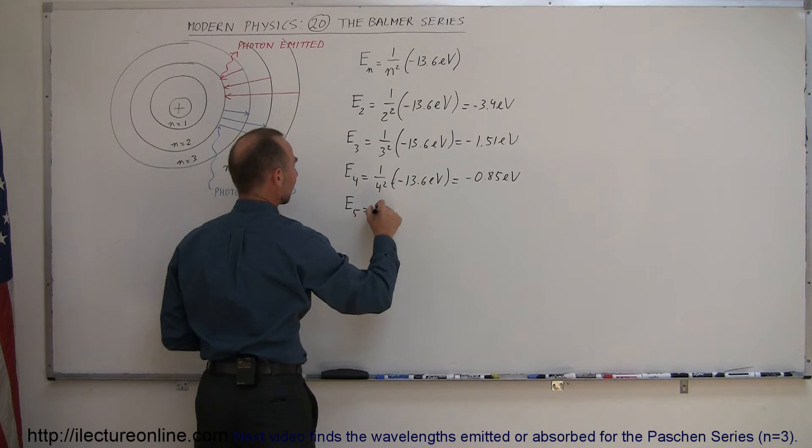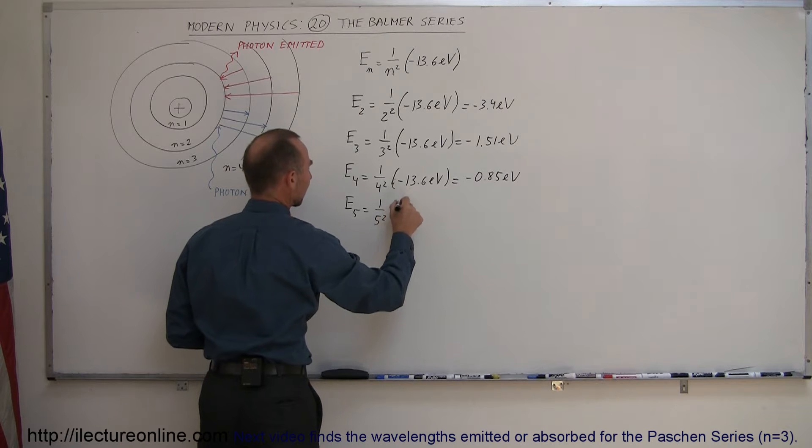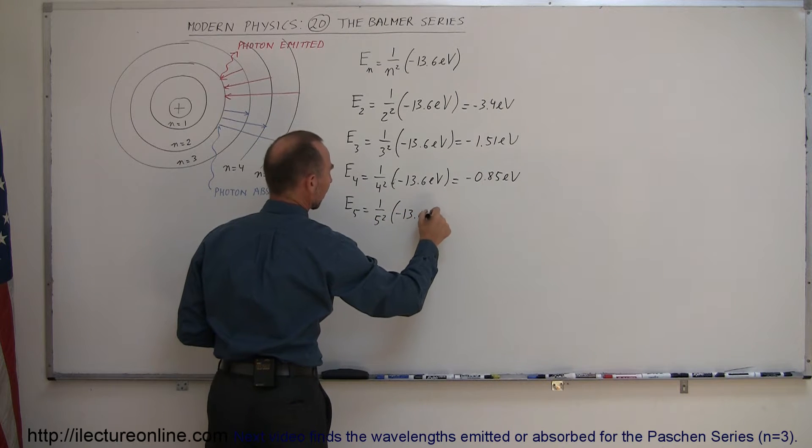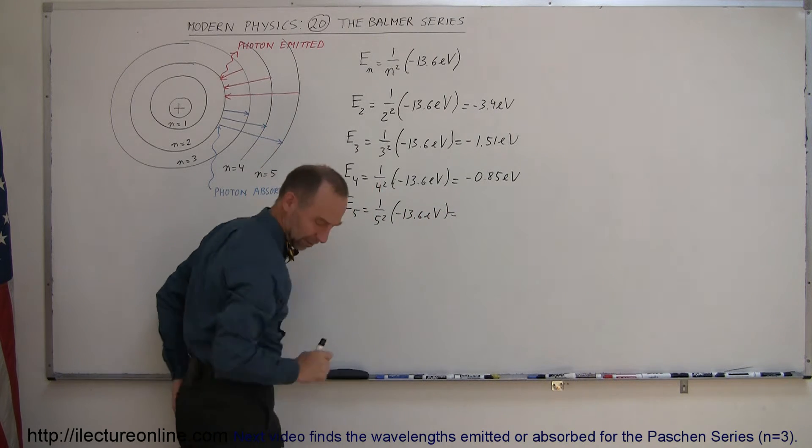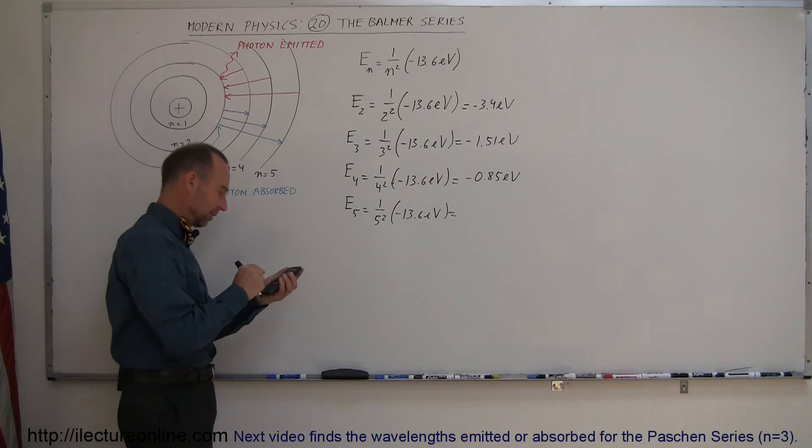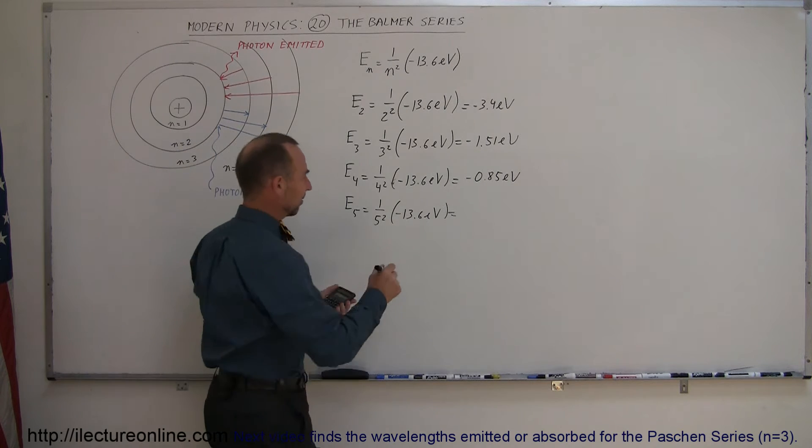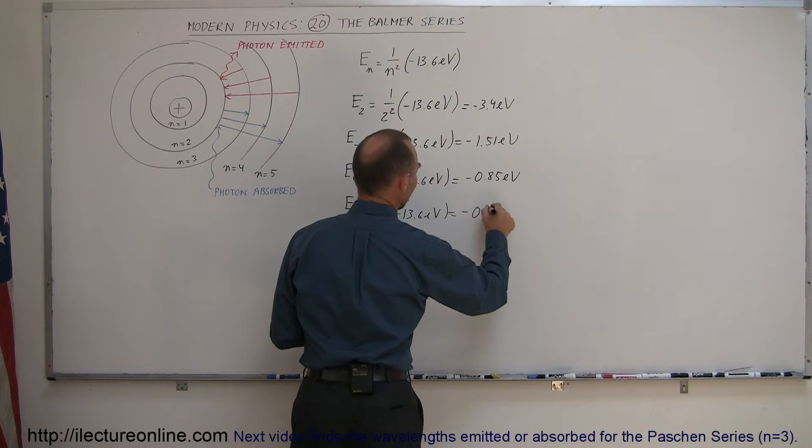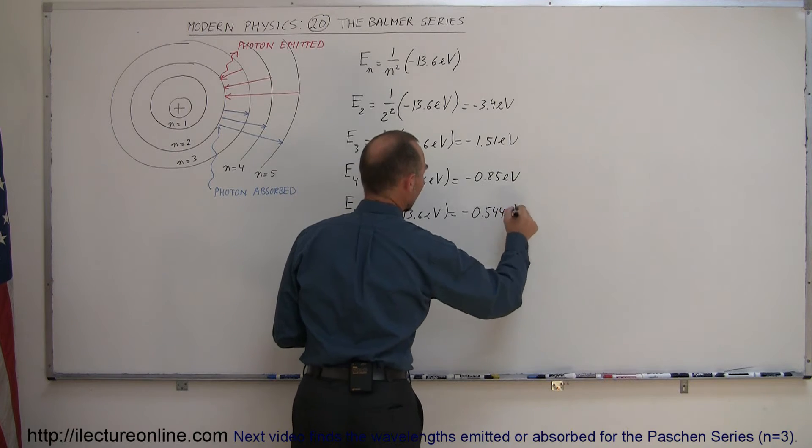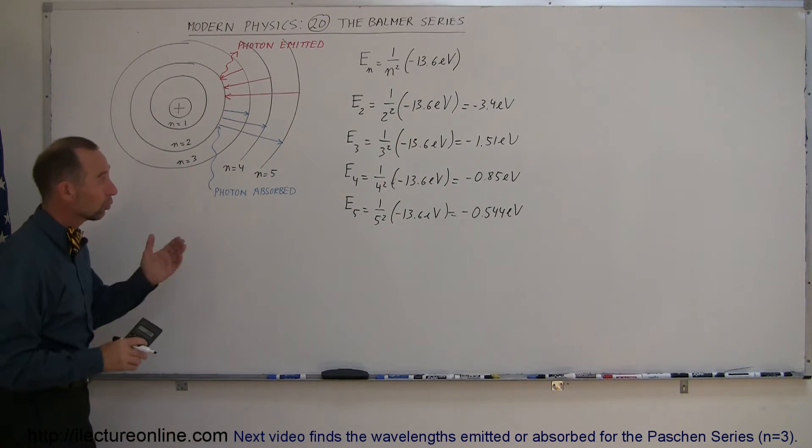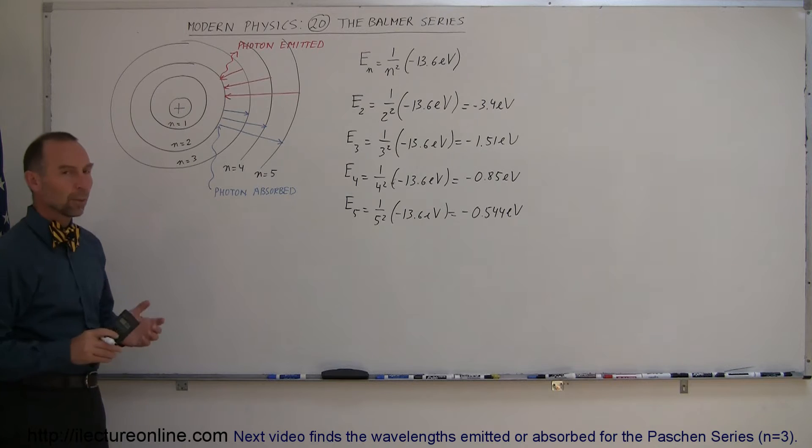And finally, the energy level of the fifth level is 1 over 5 squared times minus 13.6 electron volts, which is, let's figure that one out. 13.6 divided by 25 is minus 0.544 electron volts. So those are the energy levels of energy level 2 through 5.